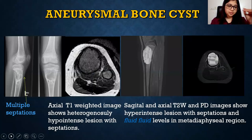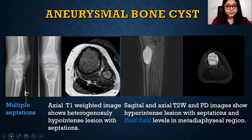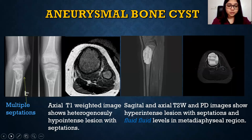A patient presented with pain and restriction of movement. X-ray showed a lytic lesion with multiple septations. Axial T1-weighted image showed a heterogeneous lesion with septation. Axial T2 and PD-weighted images showed a hyperintense lesion with multiple fluid-fluid levels, which depicts degrees of hemorrhage in aneurysmal bone cysts. This finding is not pathognomonic of aneurysmal bone cysts but is very commonly seen.